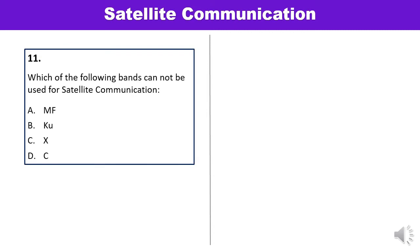Question 11: Which of the following bands cannot be used for satellite communication? Options are medium frequency, KU band, X band, and C band. Medium frequency is a lower frequency band and does not lie in the microwave spectrum. Since microwaves are used in satellite communication — lower bands get reflected by the ionosphere — answer A is correct.